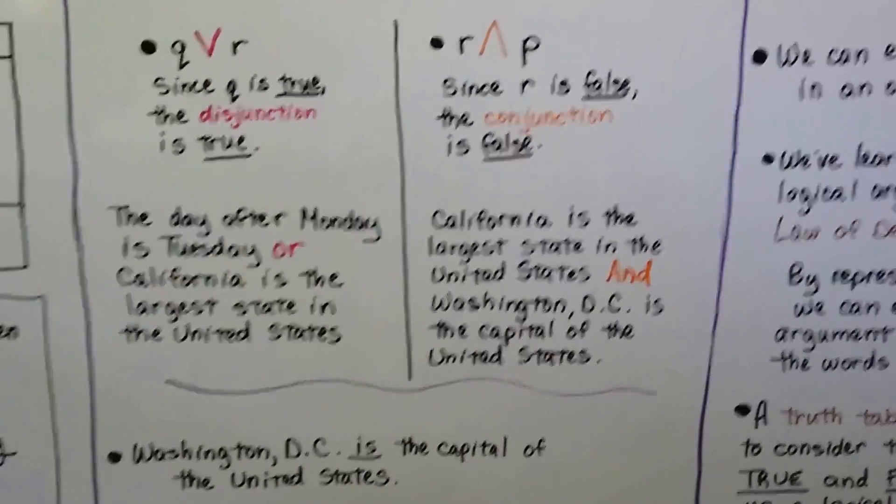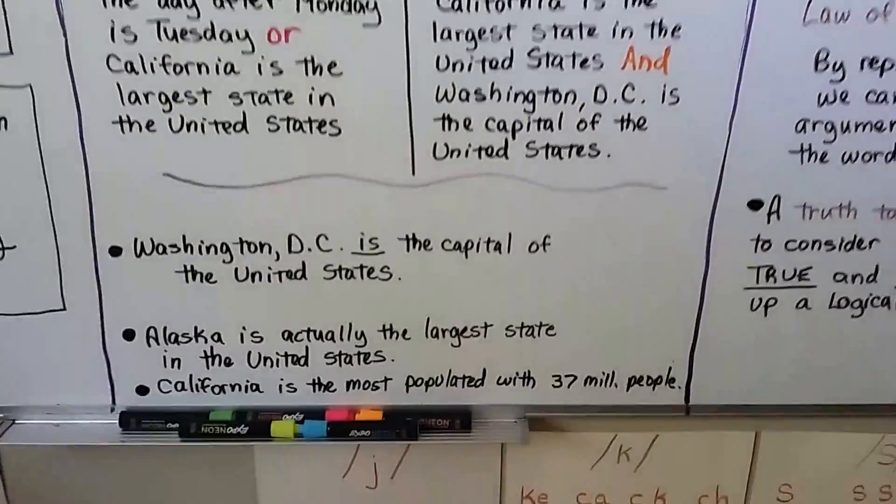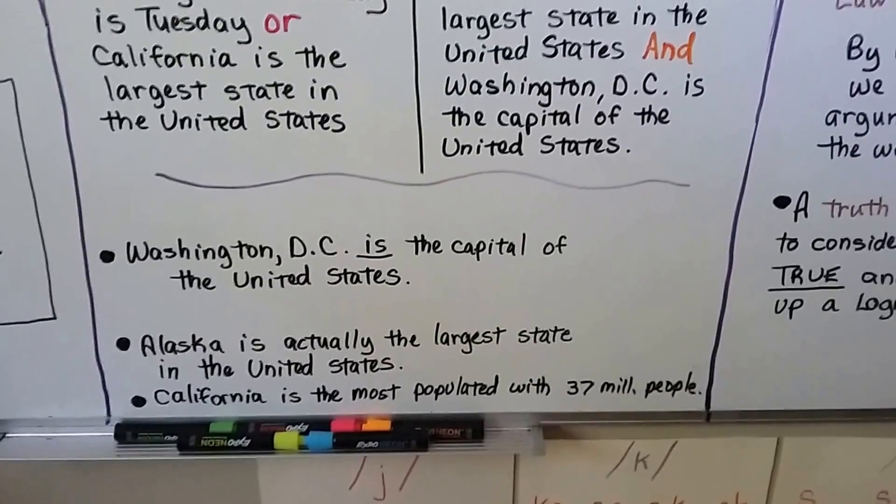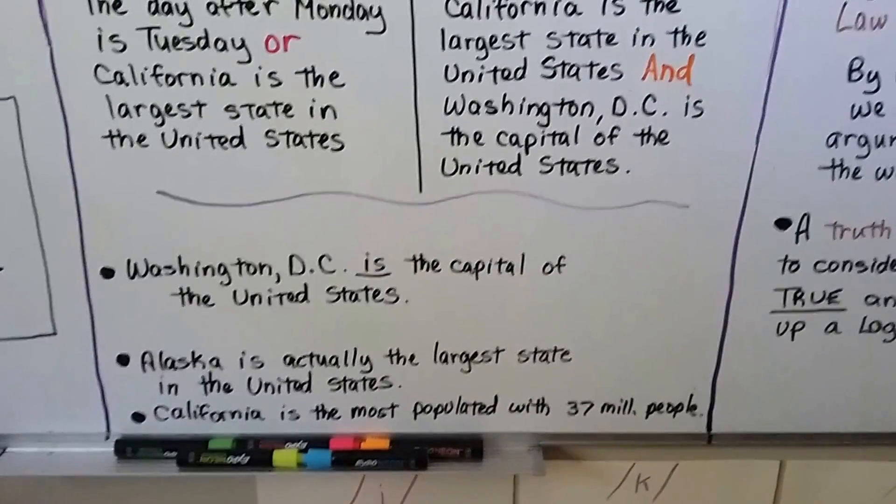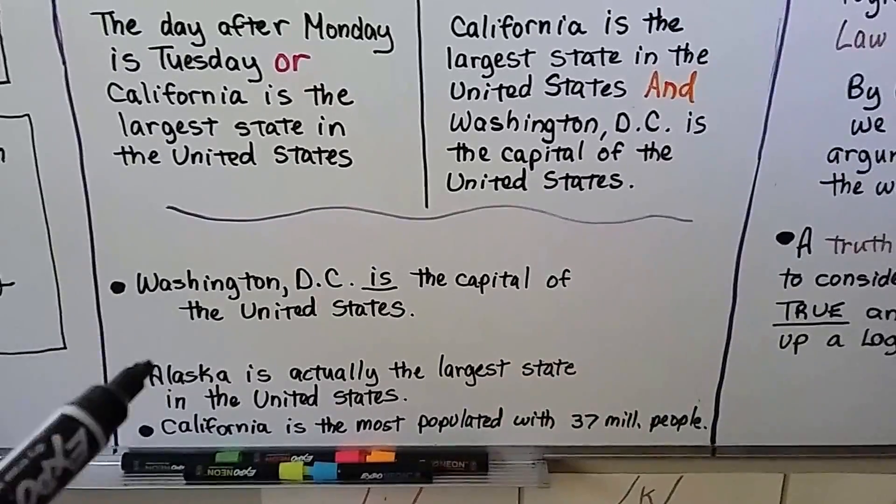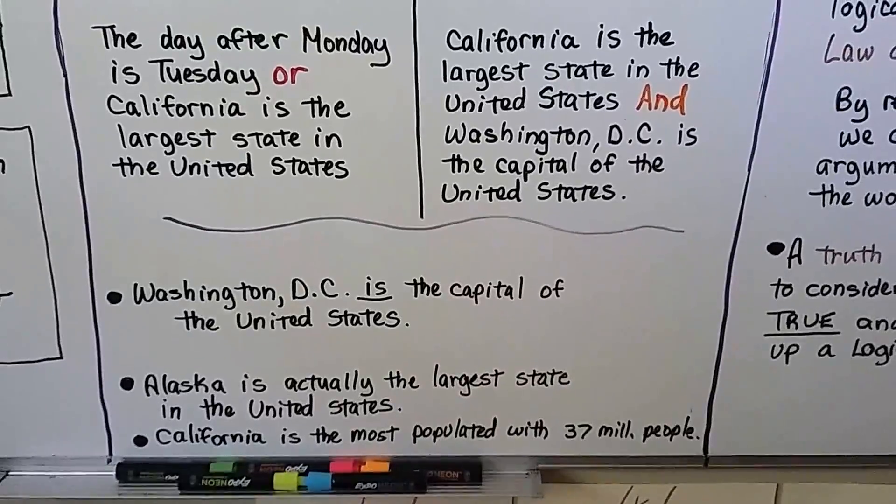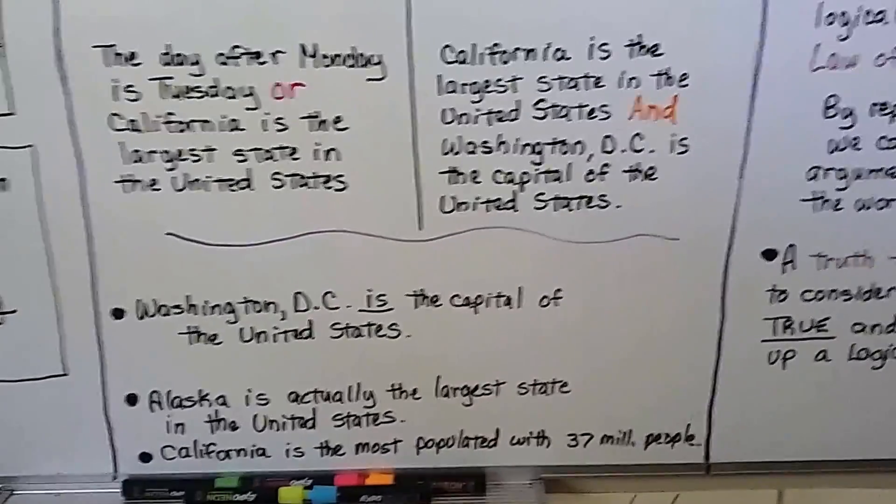Washington, D.C. is the capital of the United States. That's true. But Alaska is actually the largest state in the United States. California is the most populated with 37 million people. I think Alaska has around 700,000. So area wise, land area wise, Alaska is actually the largest state in the United States. California's just got more people.